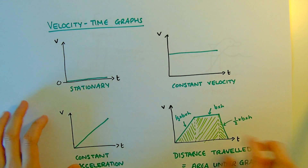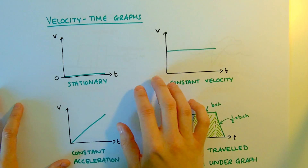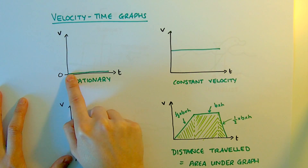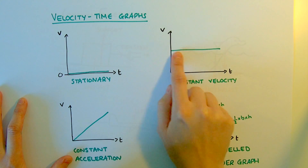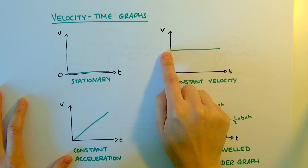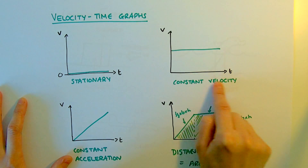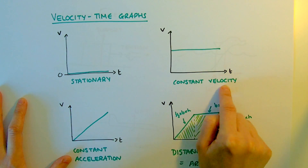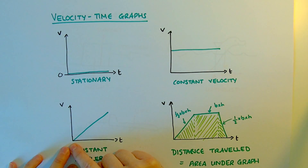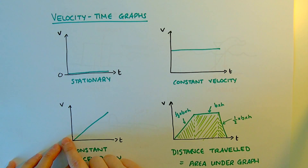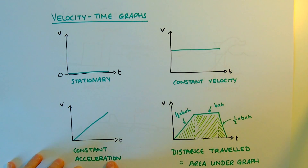Velocity-time graphs: stationary would be zero velocity, so that's a horizontal line down at zero. If the velocity is staying the same at some value, that's constant velocity or constant speed. A straight diagonal line where the velocity is increasing would be acceleration.